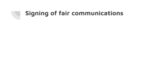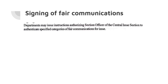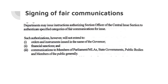Let us begin with the Signing of Fair Communications. Departments may issue instructions authorizing the Section Officer of the Central Issue Section to authenticate specified categories of fair communications for issue. Such authorizations, however, will not extend to orders and instruments issued in the name of the Governor, financial sanctions, and communications to members of parliament or MLAs, state governments, public bodies, and members of the public generally.